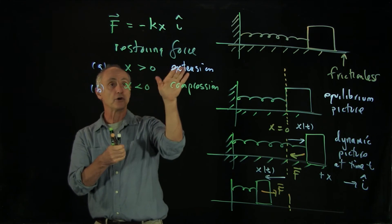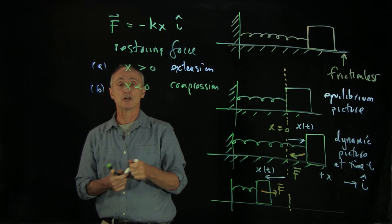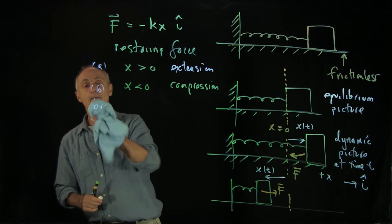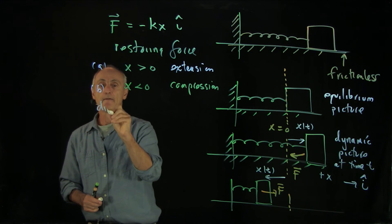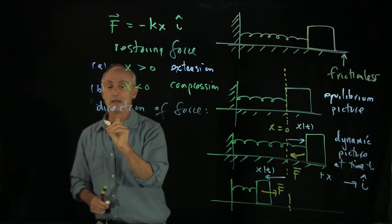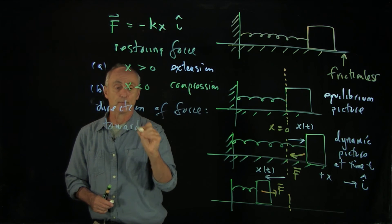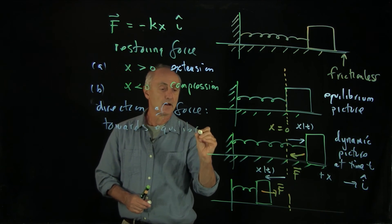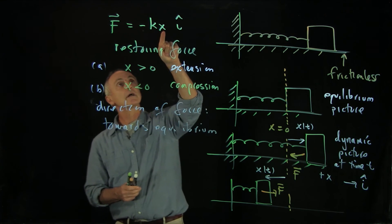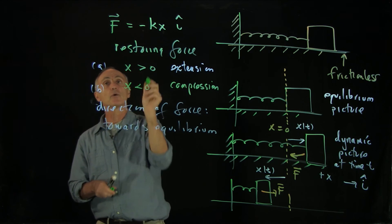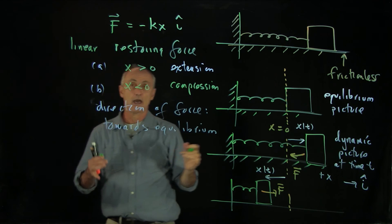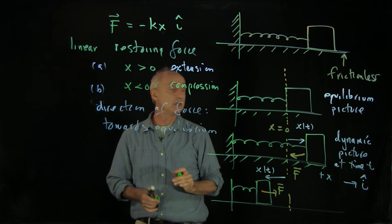So the restoring force, whether you're under extension or compression, is always bringing, is pointing, the direction of the force is towards the equilibrium position. This example of a restoring force is also only proportional to x. So in that case, we can add the word linear, because it's just to the single power x. This is an example of a linear restoring force.